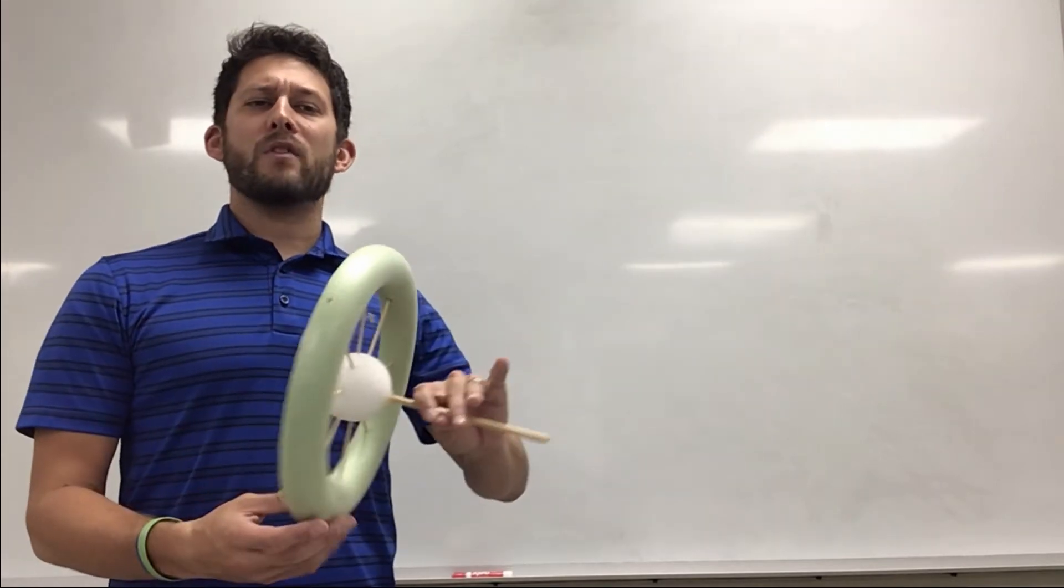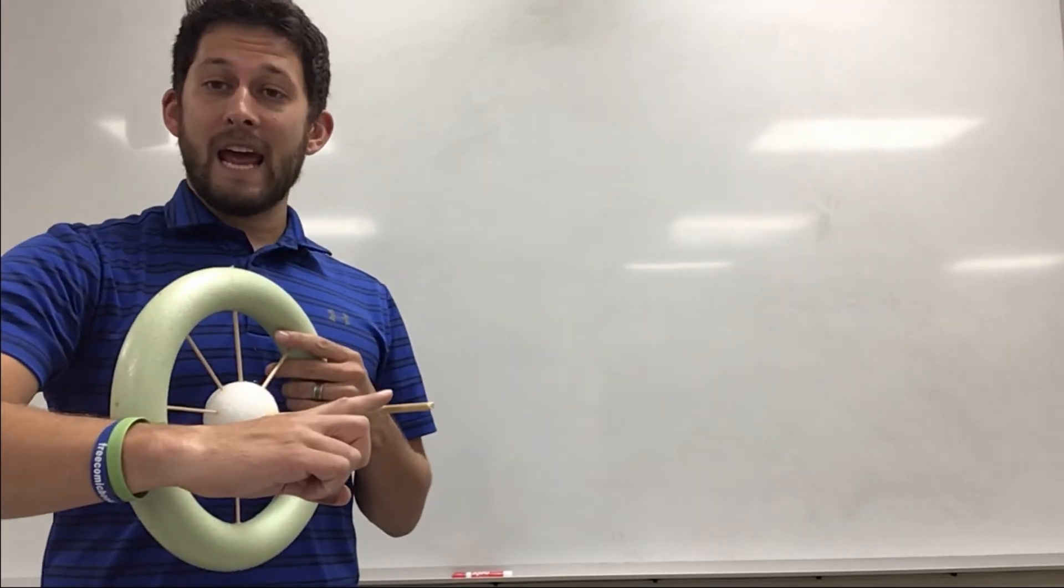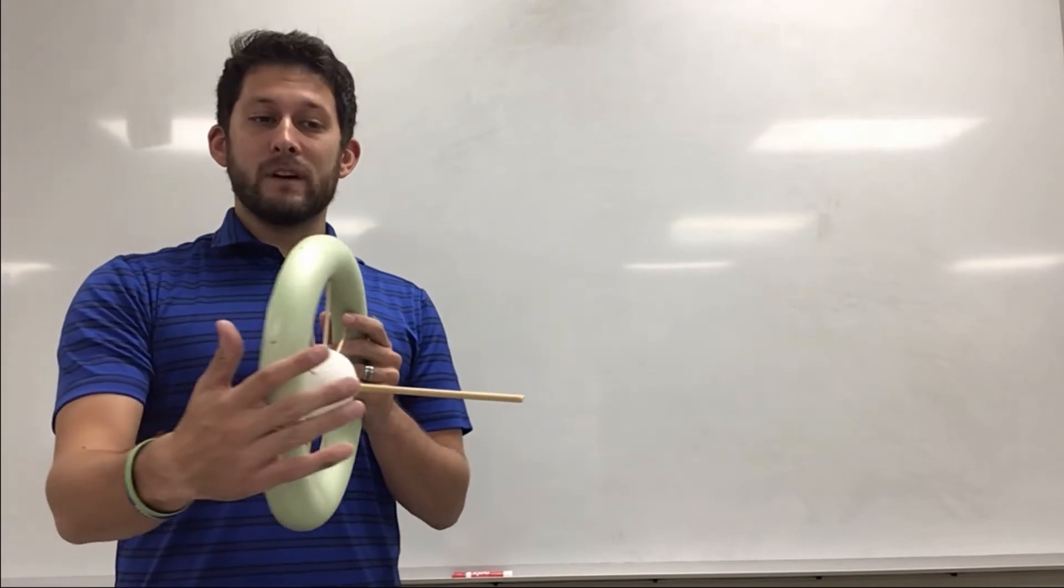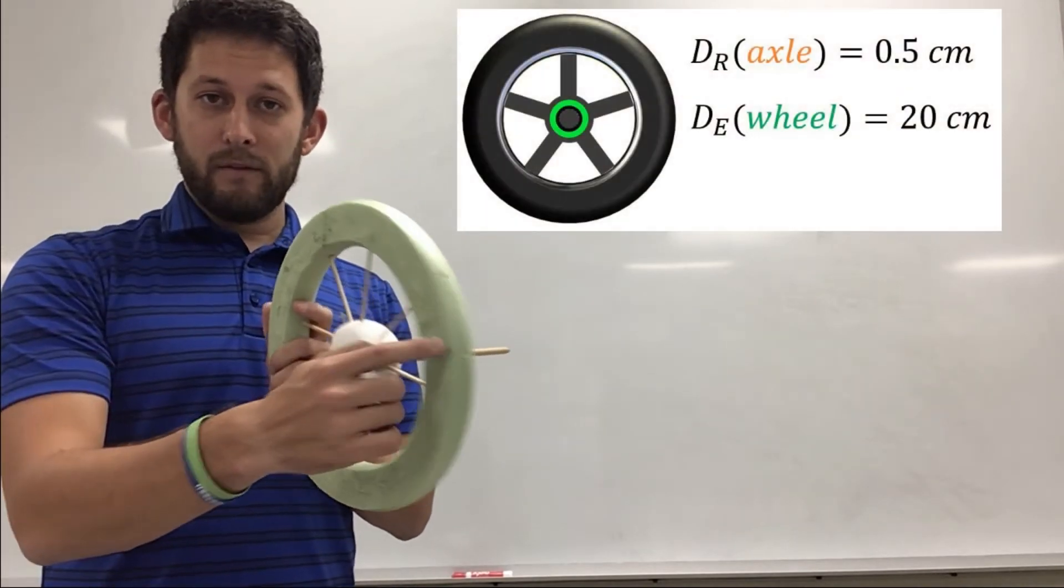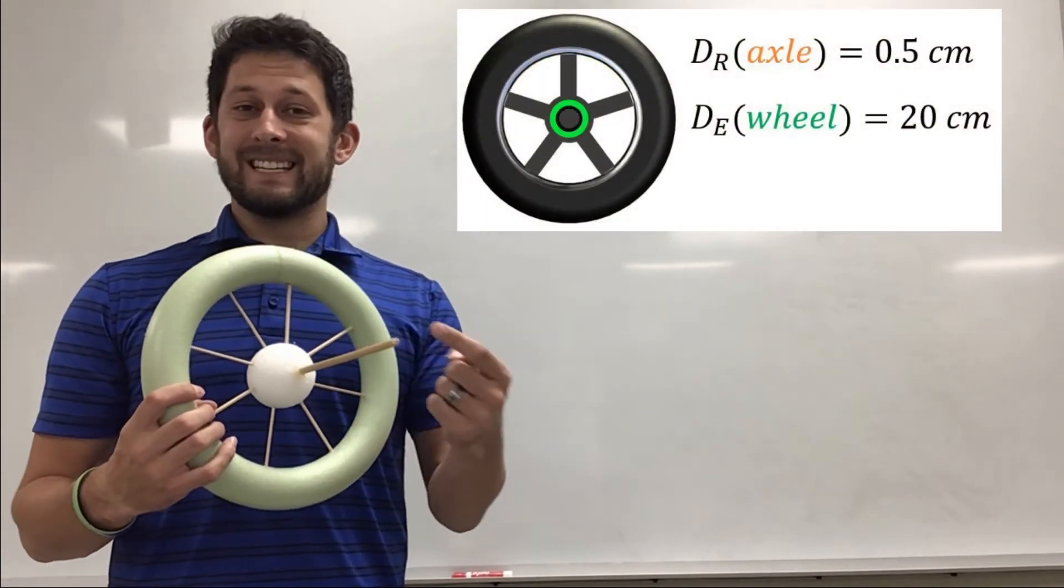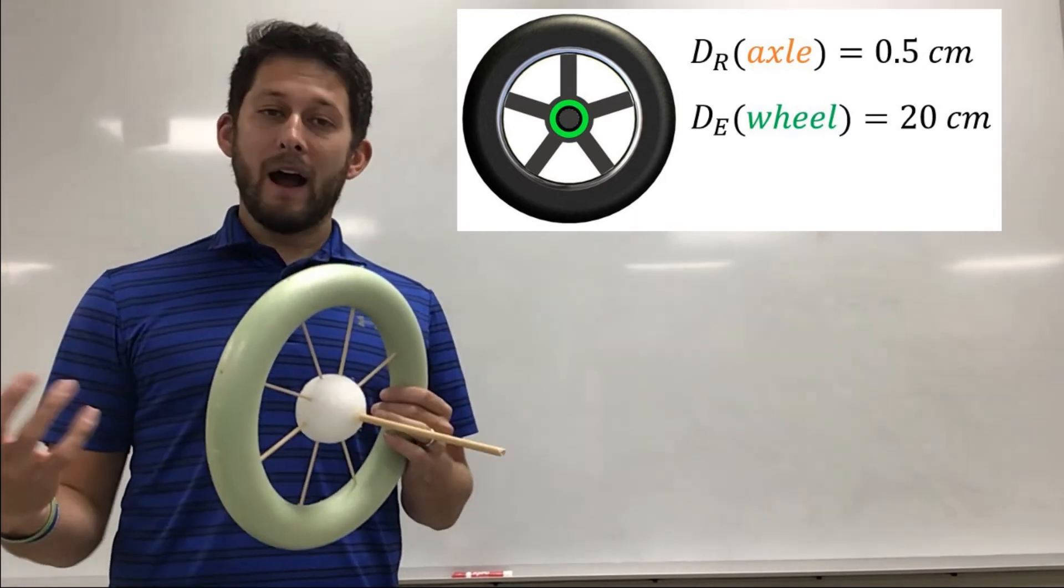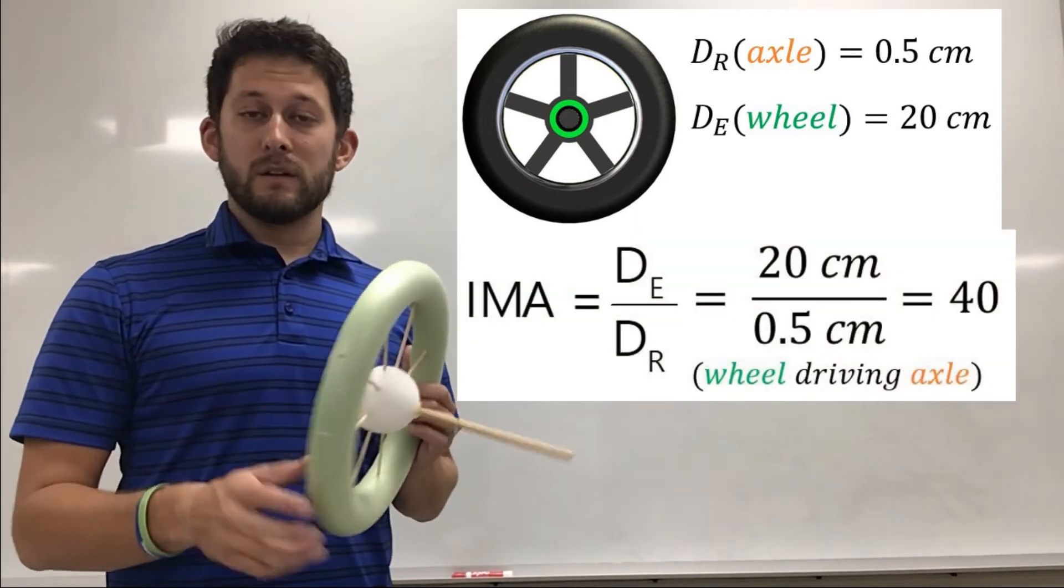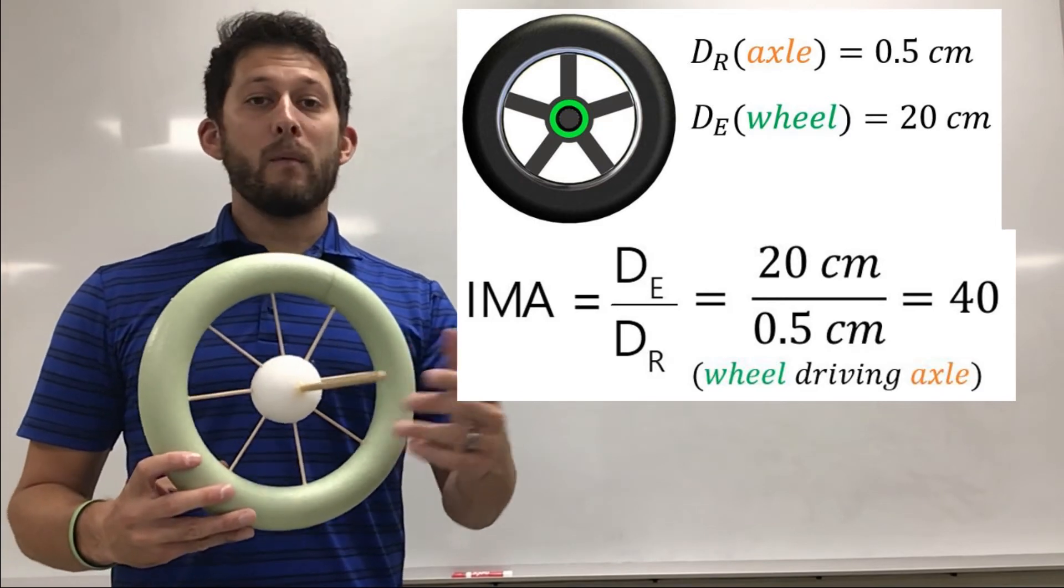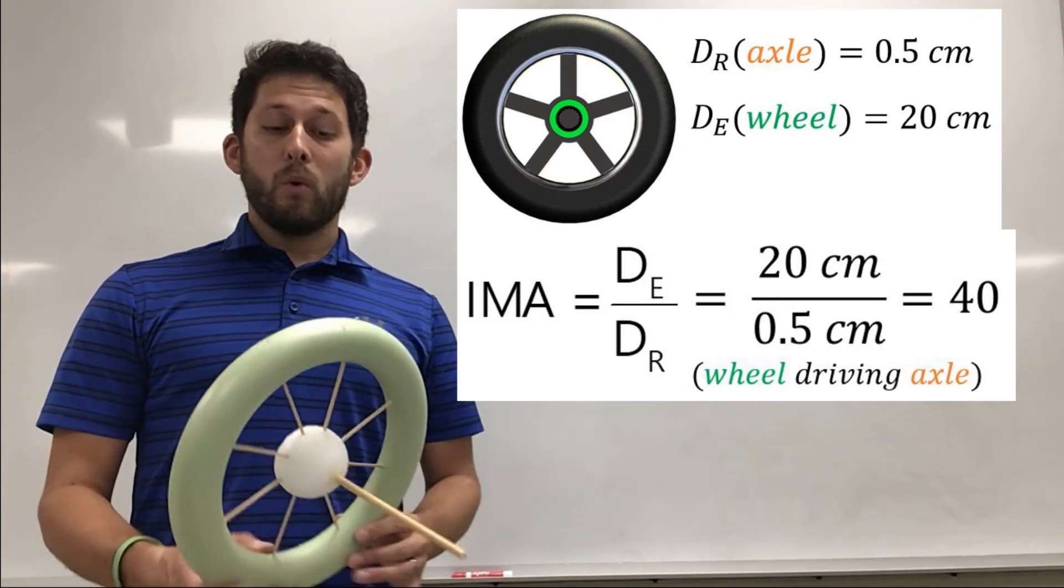Now let's flip it around the other way. Let's say that the wheel is driving the axle. So now my effort distance is the wheel itself and my resistance distance is the axle. So if we divide our 20 centimeters by 0.5 centimeters we come up with an IMA of 40 which is a huge force multiplier.